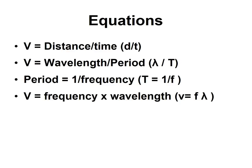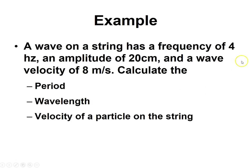Let's look at the equations. Starting with velocity from day one: velocity equals displacement over time, or distance over time. For waves, the distance is a wavelength, so velocity equals wavelength divided by the period. Recalling that period and frequency are inverses — T equals 1 over f — if we combine these, we get the key equation: velocity equals frequency times wavelength (v = f × λ). This is the key equation of this unit.